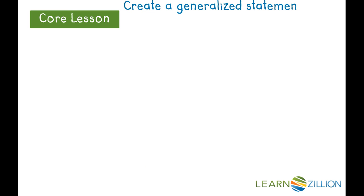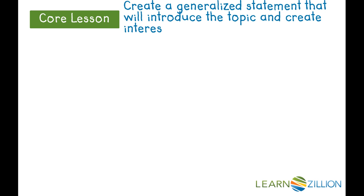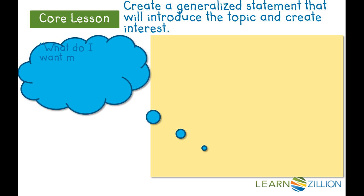Now that we have clearly stated the central idea, we need to lead into this with a generalized statement that will create interest. In the opening sentence, we want to give our reader some background information that will guide their thinking about the topic and catch their interest. What kind of statement can I use to get my reader's attention and introduce the topic? I think that the major idea I want my reader thinking about is how amazing it is that the squid still remains so mysterious, despite the fact that scientists have so much knowledge in today's world. Let's write that as a statement.